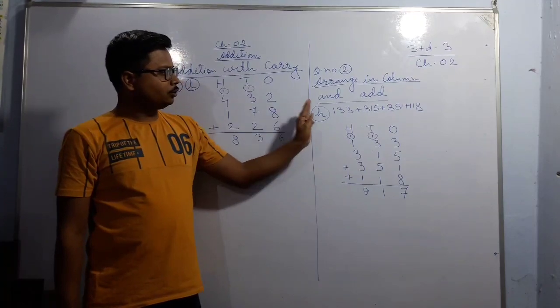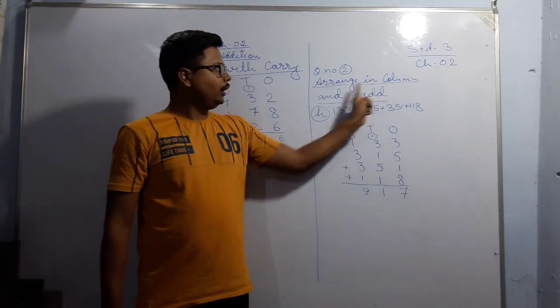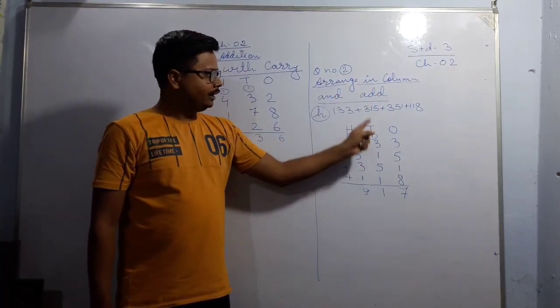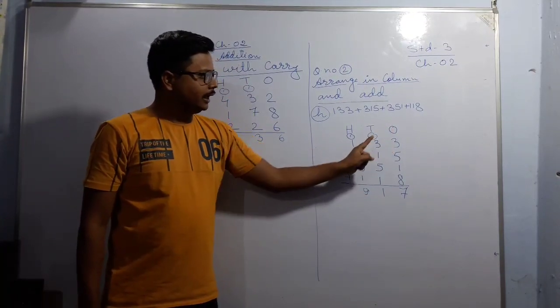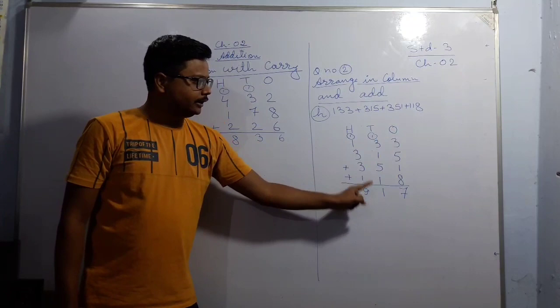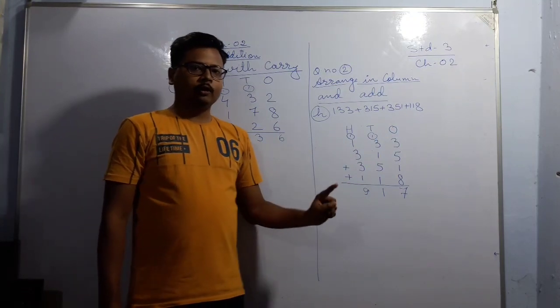So what I have done in this case—as the question is written here, arrange in column and add—I have arranged these numbers in columns according to their places and then I have added these numbers.